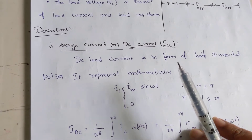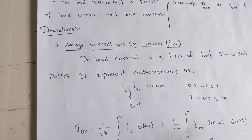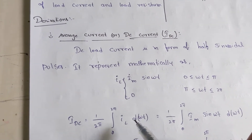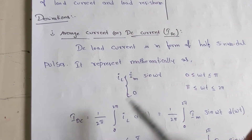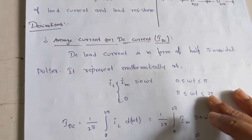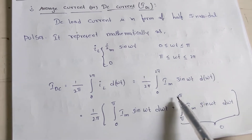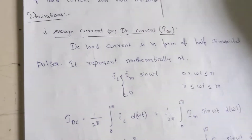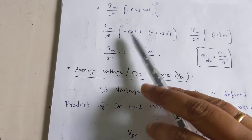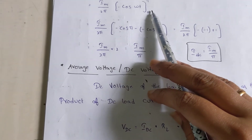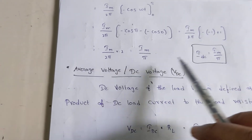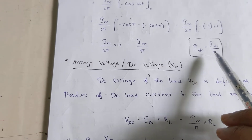To find the DC current, I take the area under the curve divided by the total area. The integral from 0 to 2π of IL dωt divided by 2π — since the value is non-zero only from 0 to π, the rest is zero. After rearranging, the integration of sin(ωt) gives −cos(ωt). Applying the limits from 0 to π, the DC current equals IM / π.